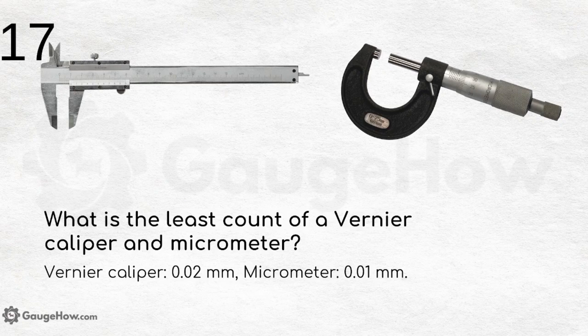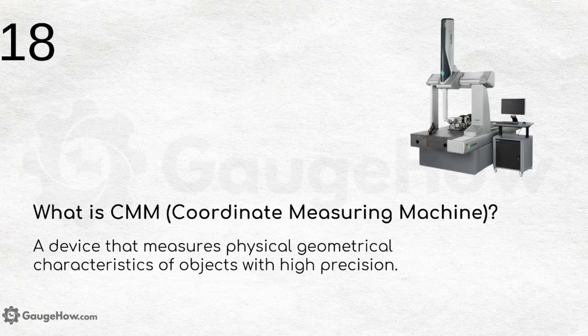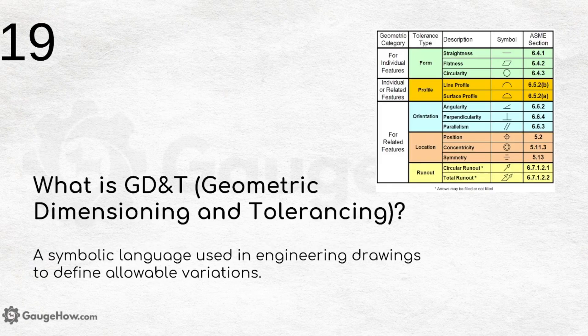What is a CMM — coordinate measuring machine? It is a device that measures physical geometrical characteristics of objects with high precision. It measures each and every coordinate with such accuracy that it can measure coordinates of a particle as thin as a strand of hair.